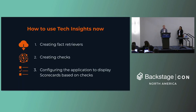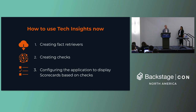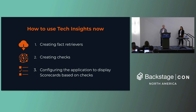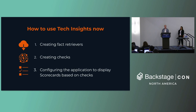Getting Tech Insights up and running is code-heavy: there are three steps to implement. First, create a fact retriever — identify your third-party data source (GitHub, Snyk, internal CI/CD), define the fact schema for the shape of the data, and write the logic to call the third party, transform the data, and dump it into the Tech Insights database.